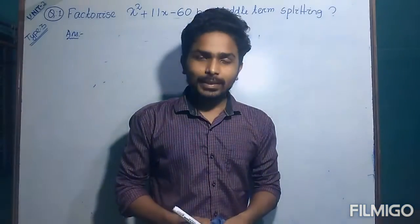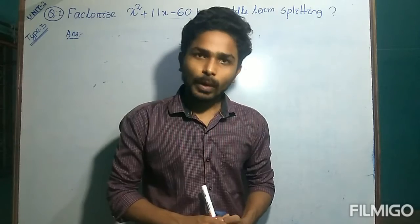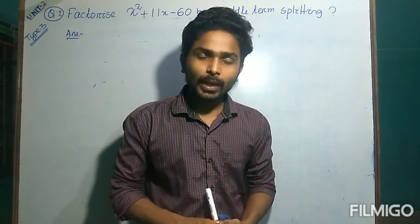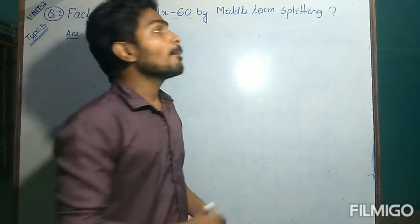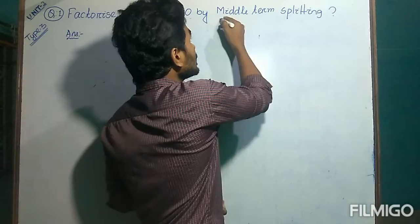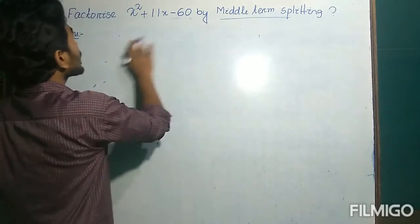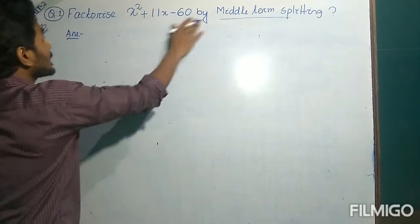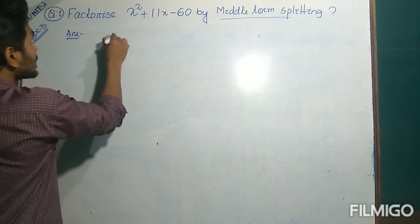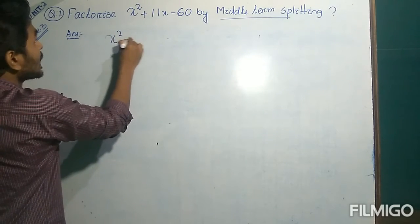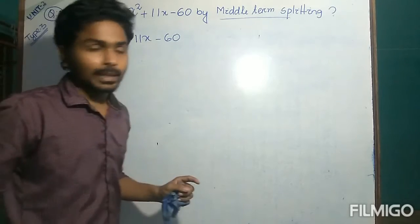Hello students. In this class we will discuss about the factorization of quadratic polynomial which is a Type 3 type of quadratic polynomial using the middle term splitting method. So let's say we have a question: factorize x squared plus 11x minus 60, this is the quadratic polynomial by middle term splitting.